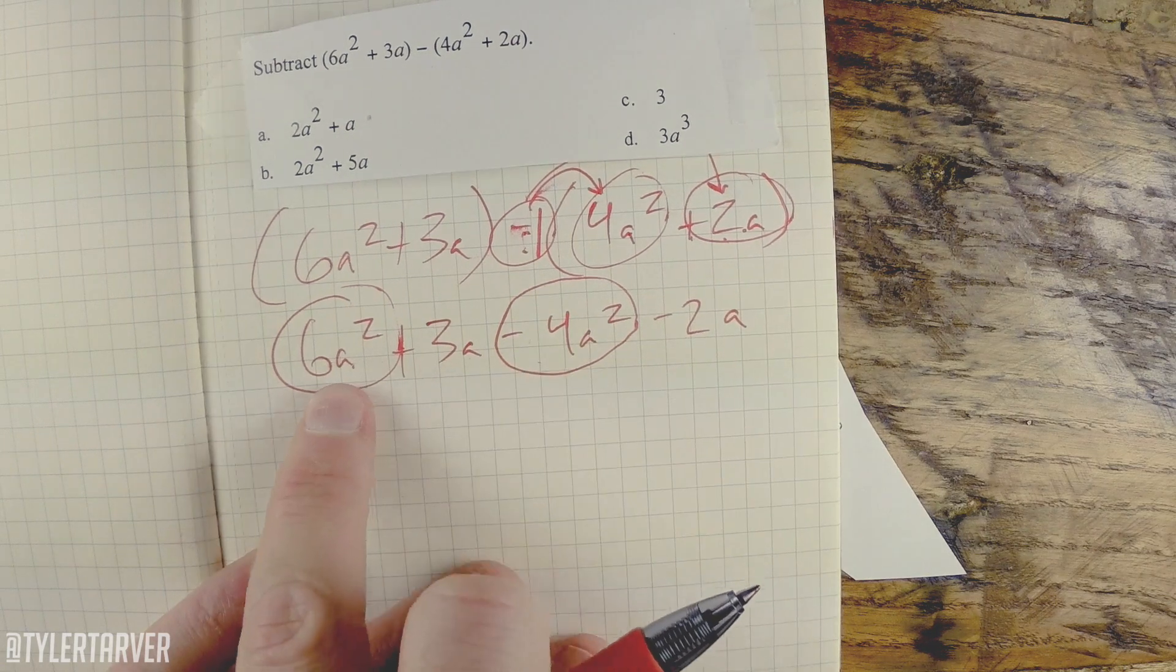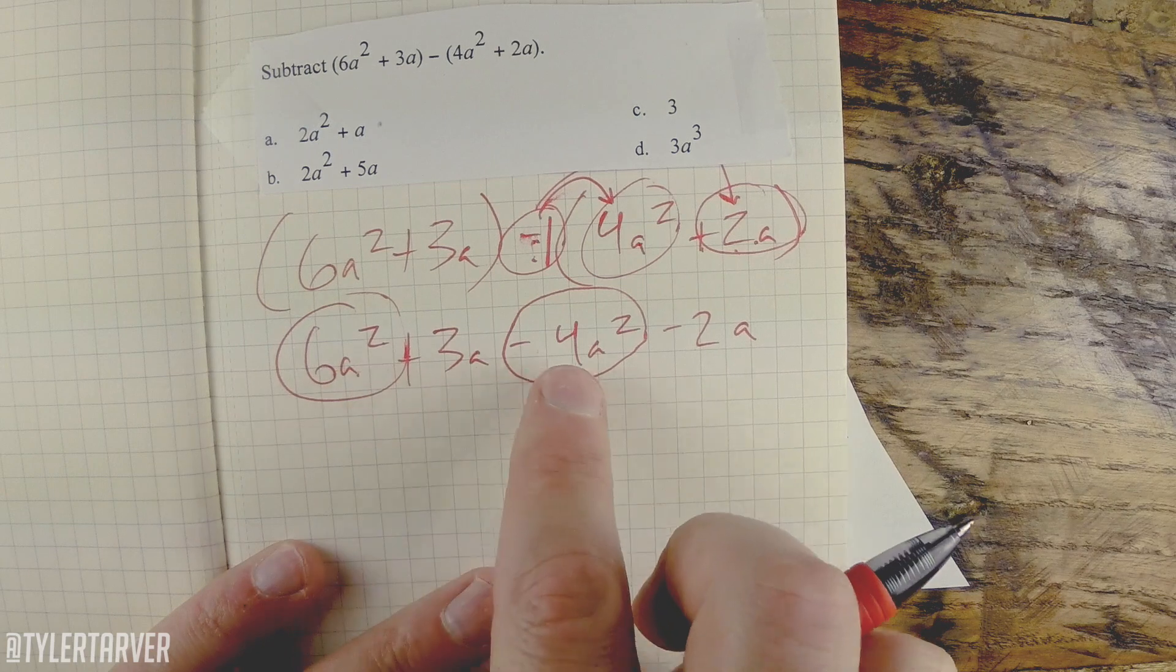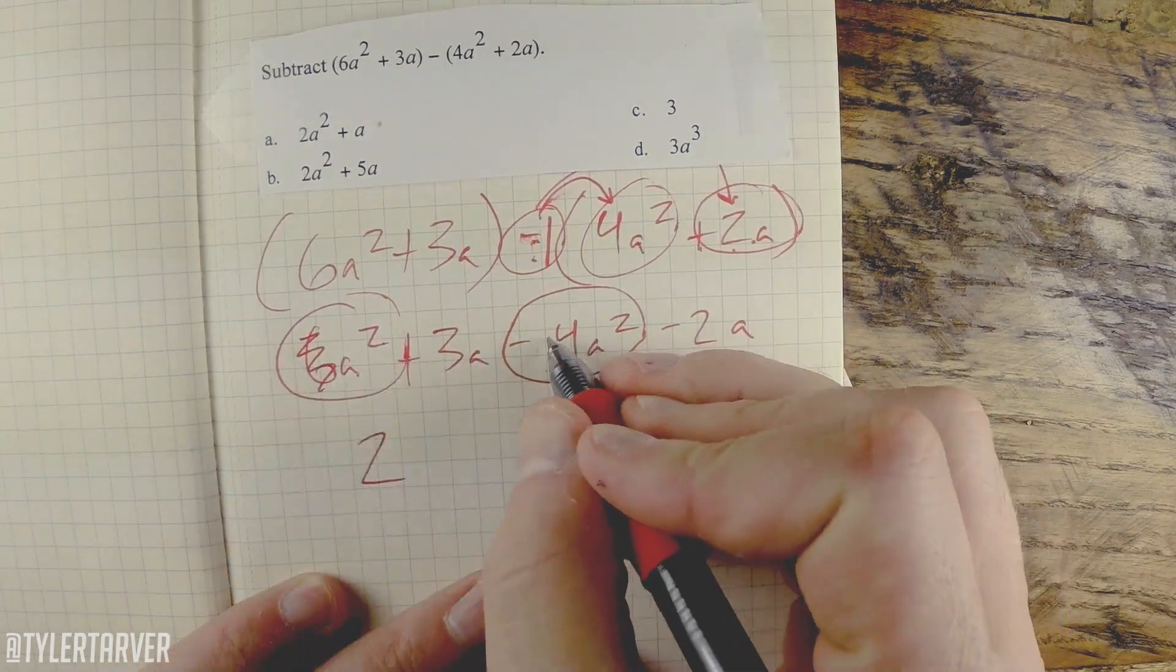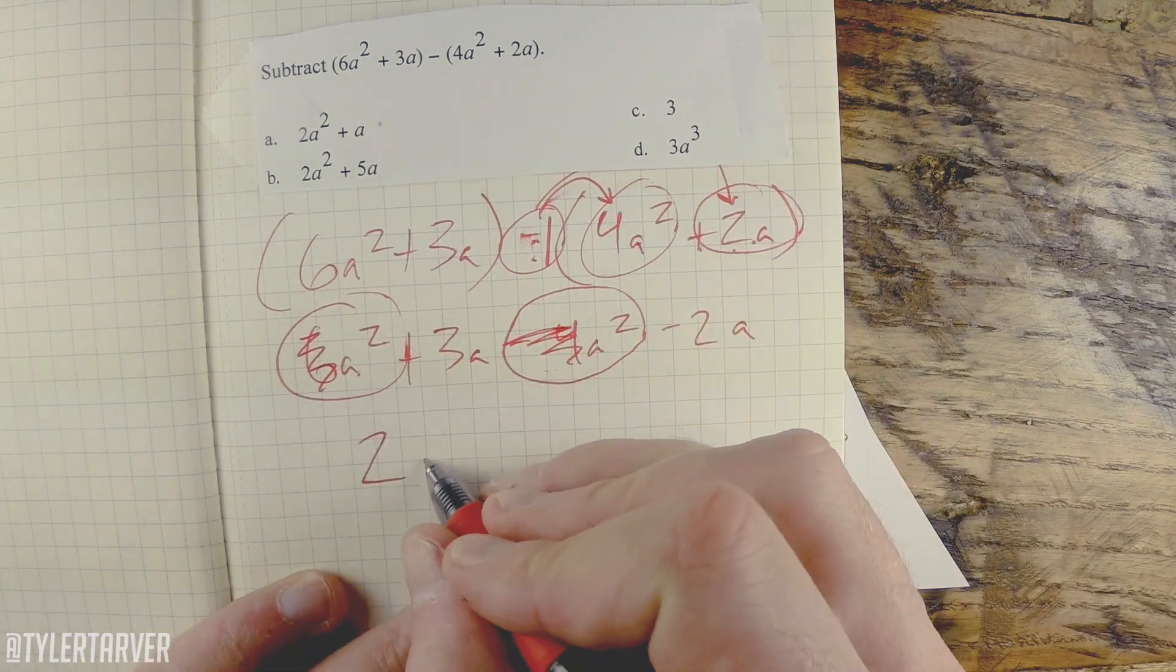So now I just look at what's circled: 6a² minus 4a². So 6 minus 4 is 2. All right, so I'm going to mark that out because that was easy. And then a². That stays a².